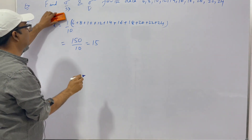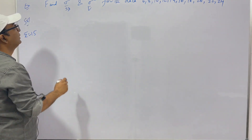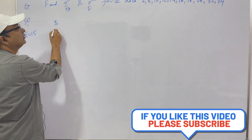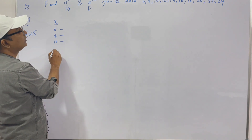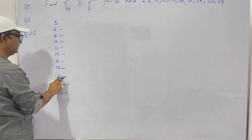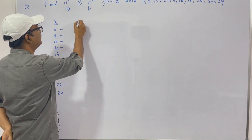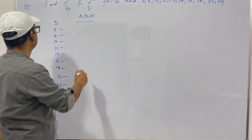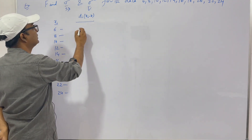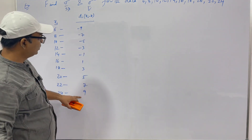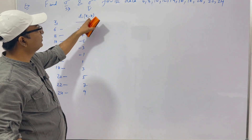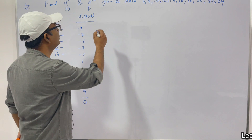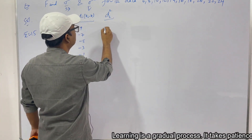Our mean x̄ = 15. Now let's make a table with xi values: 6, 8, 10, 12, 14, 16, 18, 20, 22, 24. We compute di = xi − x̄ = xi − 15. The deviations are −9, −7, −5, −3, −1, +1, +3, +5, +7, +9 — if you add them all it will be zero. Then we take the square of each: 81, 49, 25, 9, 1, 1, 9, 25, 49, 81.